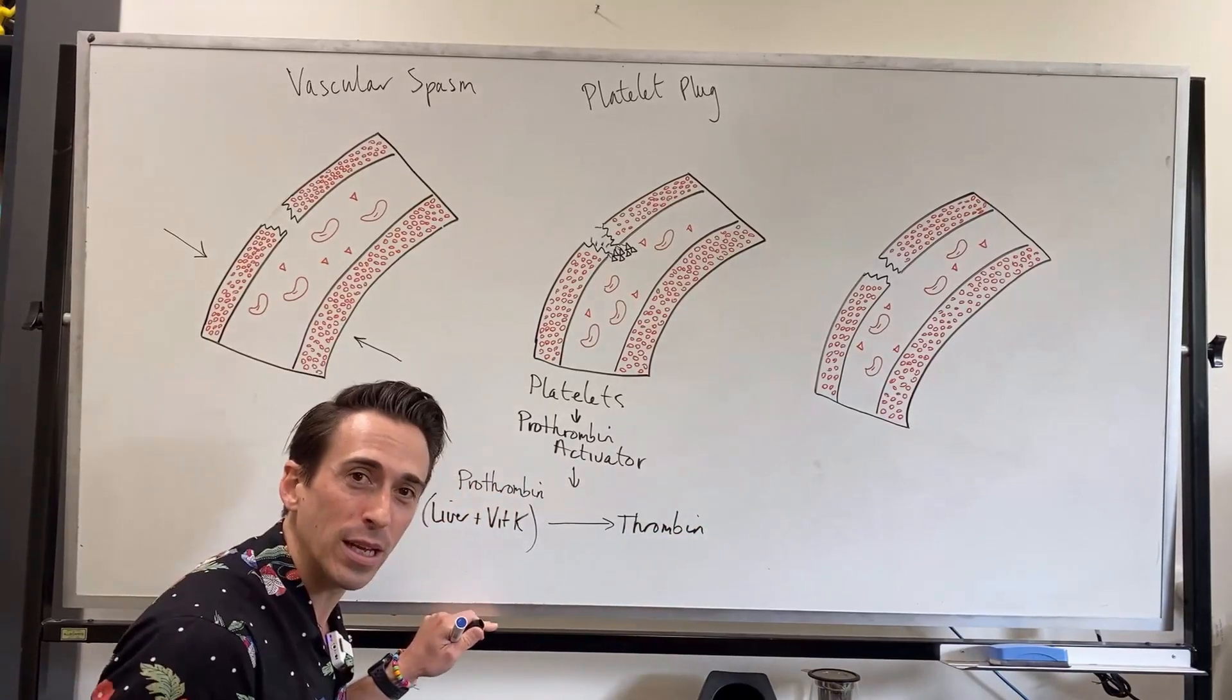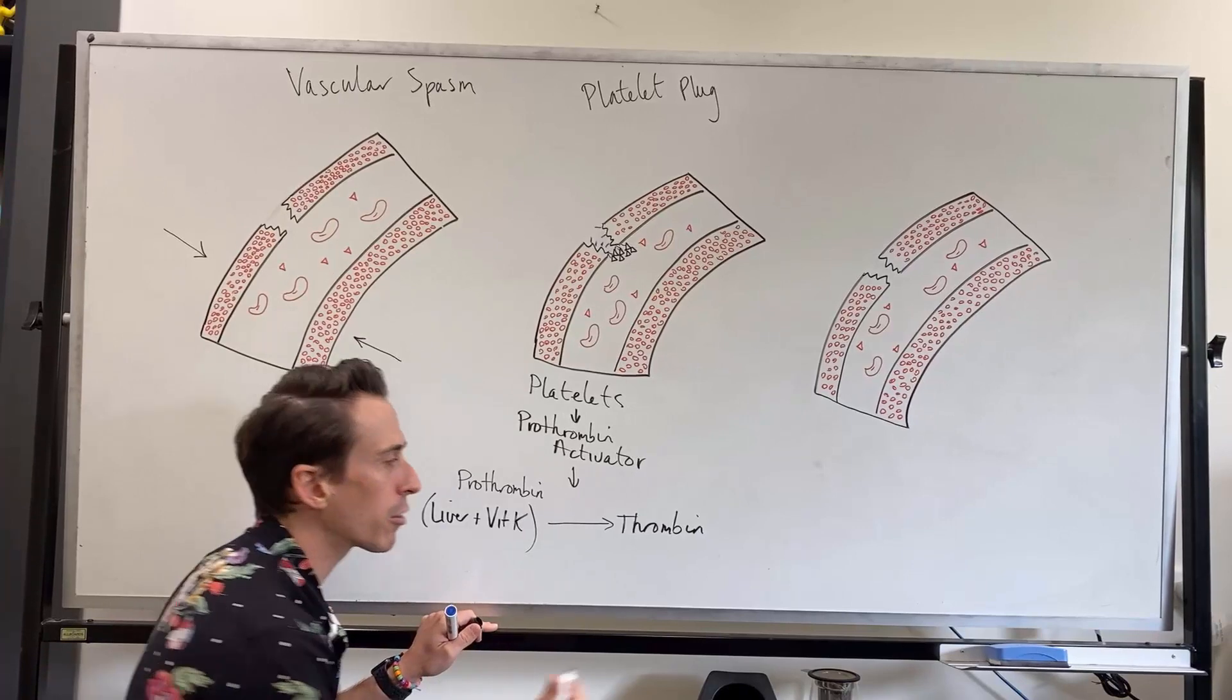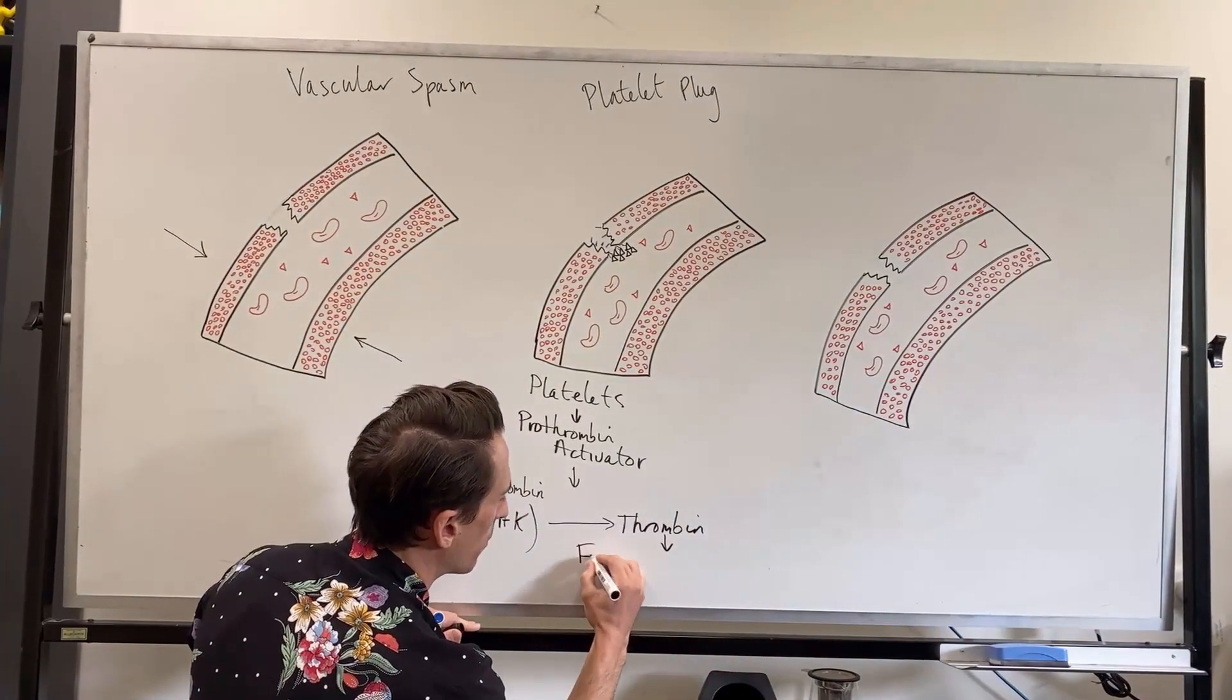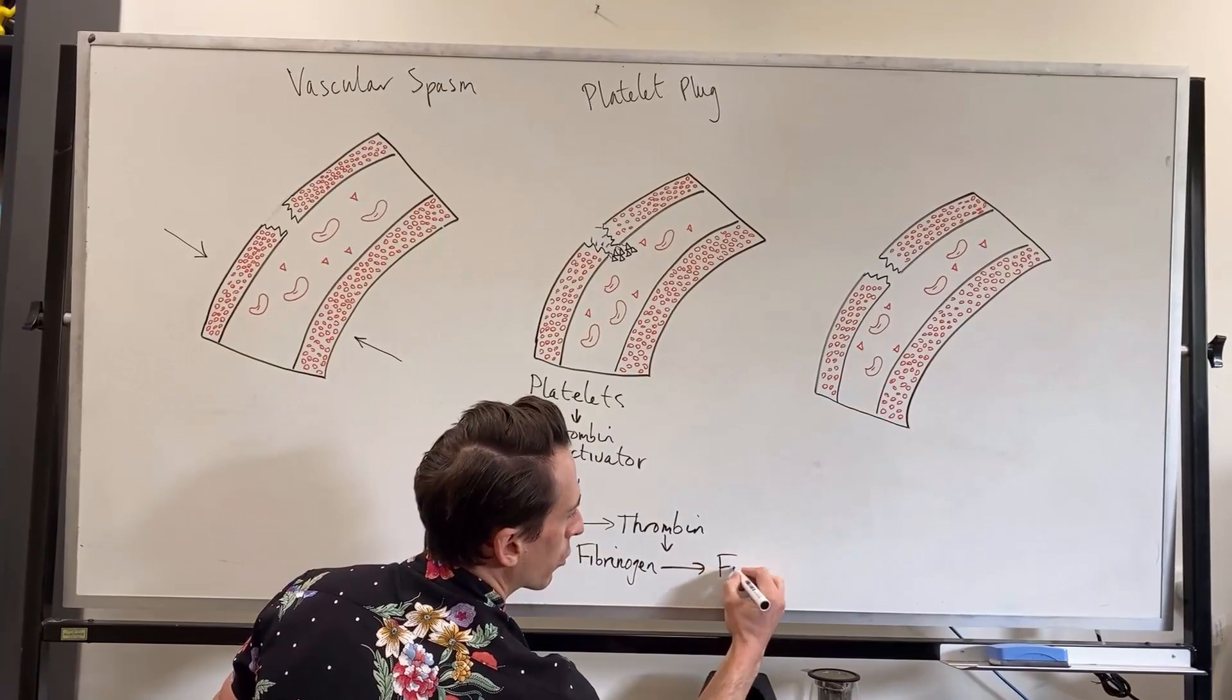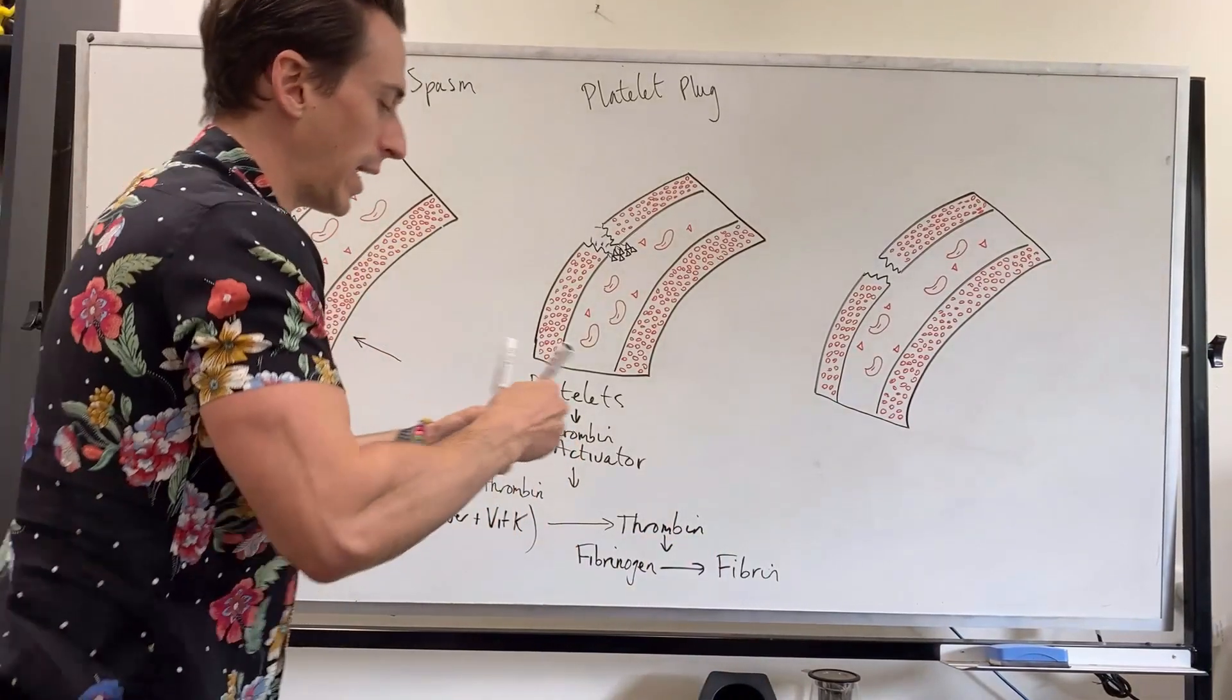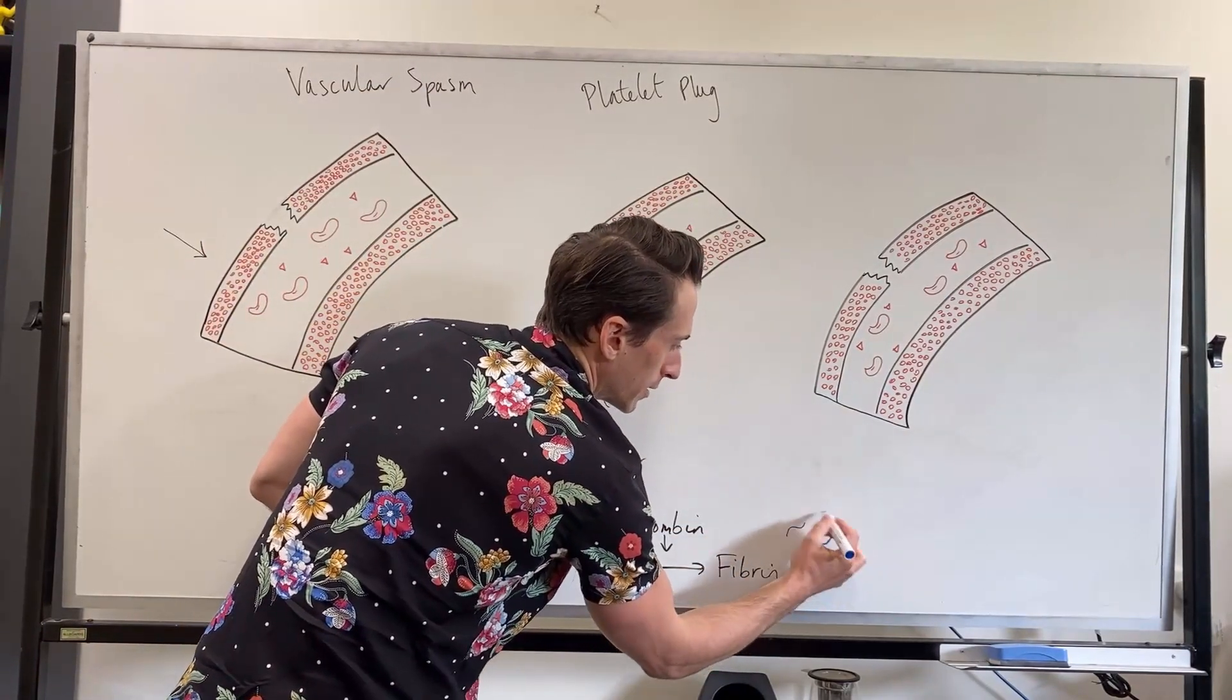And what thrombin is, is they're molecular scissors that cut proteins. And the protein that thrombin cuts in this case is going to be fibrinogen. And it cuts fibrinogen into fibrin. And this is what we want. We want fibrin because what fibrin is, is they're these protein threads.